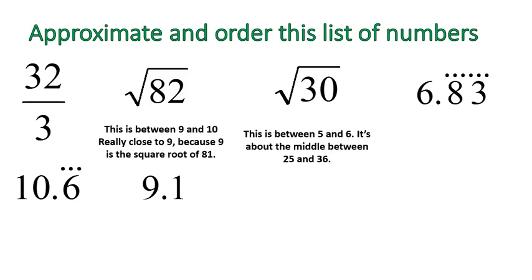It's between 5 and 6. 5 is the square root of 25, 6 is the square root of 36. So where does the square root of 30 fit between the square root of 25 and the square root of 36? I'd say it's right about the middle, so I'm going to guess 5.5 for that one.